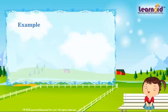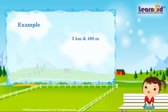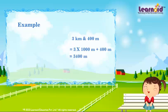Let's take another example. 3 kilometers and 400 meters is equal to: 3 kilometers is 3 into 1000, that is 3000 meters, plus 400 meters, which is equal to 3400 meters.